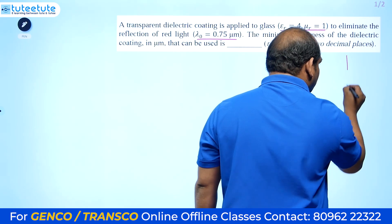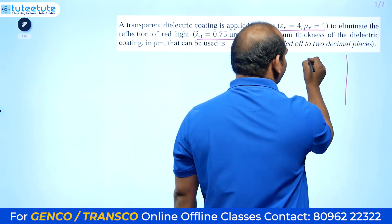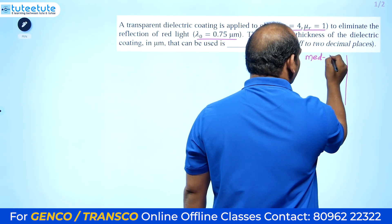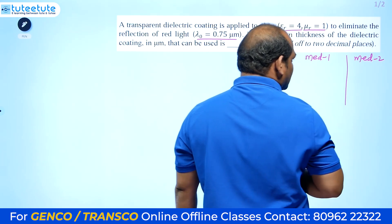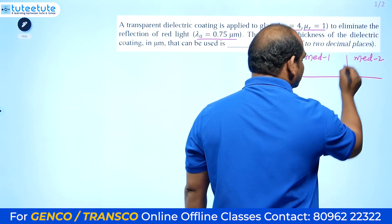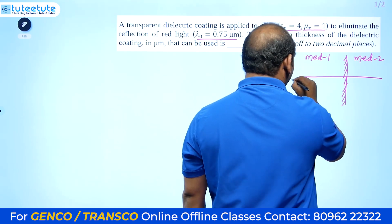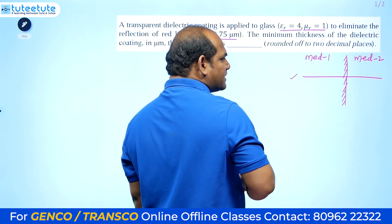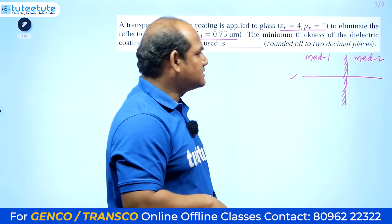We have studied about the interface between two media — medium 1 and medium 2. This is the normal to the interface. We can incident the waves in two ways: one is normal incidence and the second one is oblique incidence.